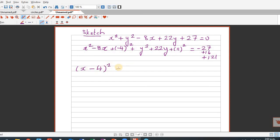This is basically x minus 4 the whole squared plus y plus 11 the whole squared is equal to - let me do it - 121 plus 16 is 137 minus 27 is 110. So 110 you can't write as a square. Let me write in the standard form. This is x minus 4 squared plus y minus minus 11 squared is equal to square root of 110 squared.